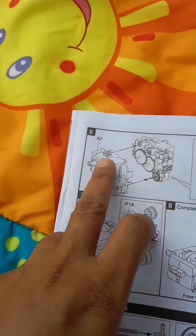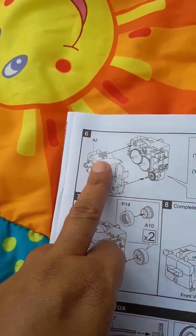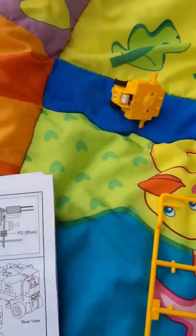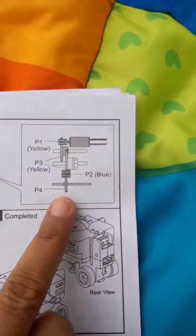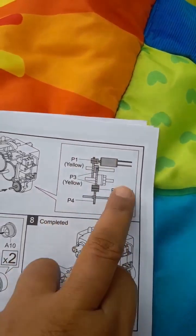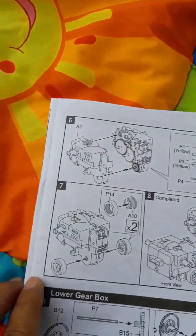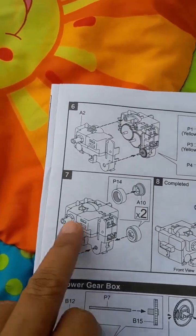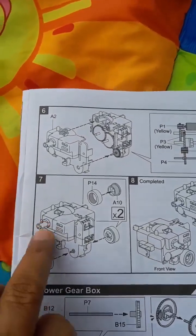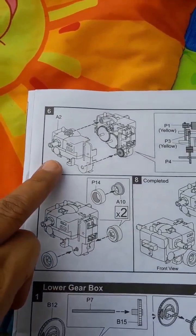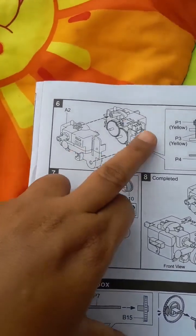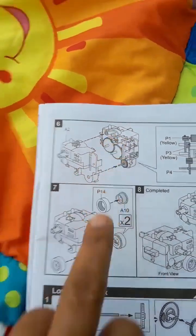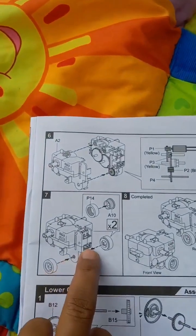Now cut the part A2 from the yellow plastic board and you will see the gear assembly like this. And assemble the A2 part to this made unit. After assembling, we will need two P14 and two A10 parts.